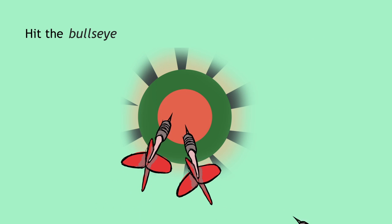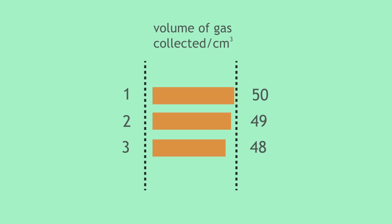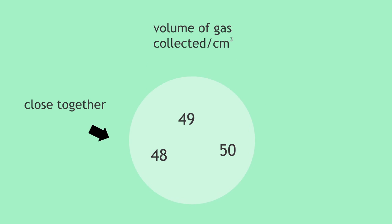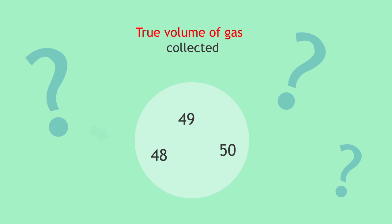The answer is that all of your darts have hit the bullseye. We would say your throw in this round is accurate. In your experiment however, all of the results are close together. But we're not sure what measurement is the true volume of gas collected.